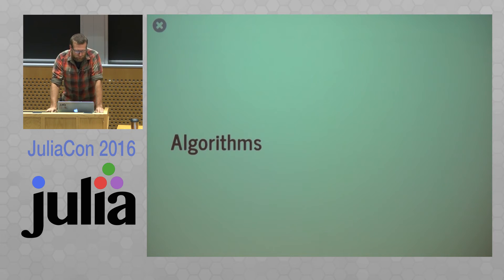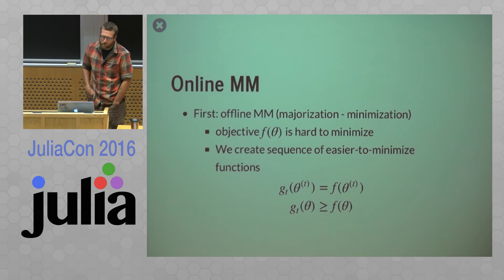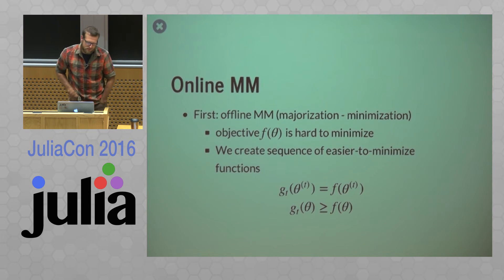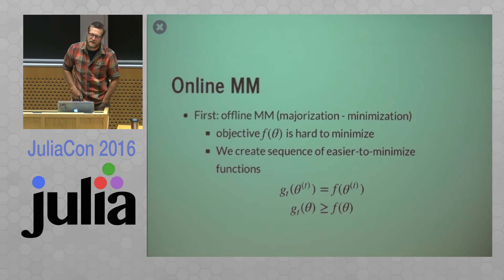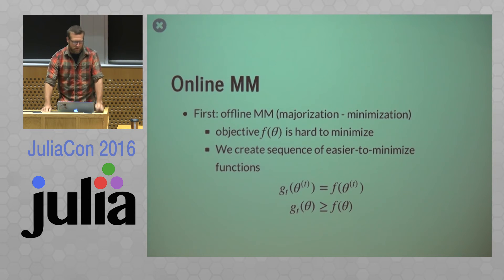Alright, so I'd like to talk about some of the algorithms that I'm using in this package. So this is essentially the implementation version of my research. So one of the things, the first things that I looked into was this online MM algorithm. So I'll first describe what offline MM is. And it's more of a concept than an algorithm but it stands for majorization minimization. And the point of this is that suppose we have some objective function f and it's really hard to minimize for whatever reason. So instead of minimizing f directly, we're going to create a sequence of easier functions.